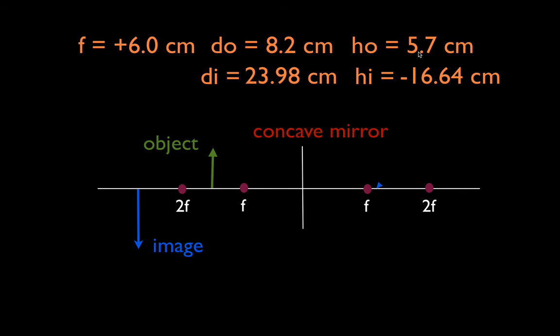So there you go. That's how you do that for a concave mirror. Object distance more than f. Thank you very much for watching. If you thought that was helpful leave me a comment in the comment section or a thumbs up down below. Thank you very much. See you next time.